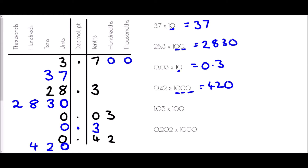For the last two I'll work without the diagram. Multiplying by 100 means everything moves two places to the left. For 1.05 times 100: the 1 goes to hundreds, the 0 to tens, and the 5 to units — answer is 105. For 0.202 times 1000: the 2 in tenths goes to hundreds, the 0 to tens, the 2 to units — answer is 202.